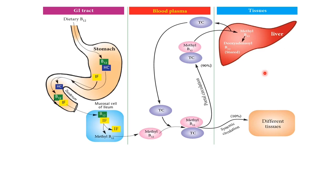Two important factors are required for the absorption of vitamin B12. First is the intrinsic factor of Castle, secreted by the parietal cells of the stomach. Second is cobalophilin, which is secreted in the saliva. Gastric pepsin releases the vitamin from proteins of the food, and then vitamin B12 binds with cobalophilin. In the duodenum, cobalophilin is released by trypsin of the pancreatic juice, the vitamin is released, and it binds to the intrinsic factor. In pancreatic insufficiency there is an absence of trypsin, so the vitamin-cobalophilin complex is excreted, resulting in vitamin deficiency.